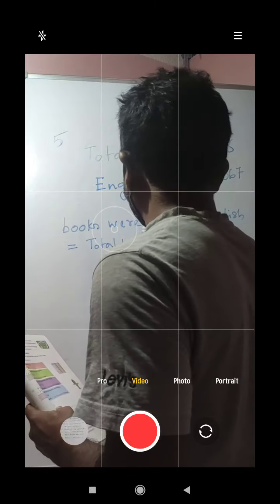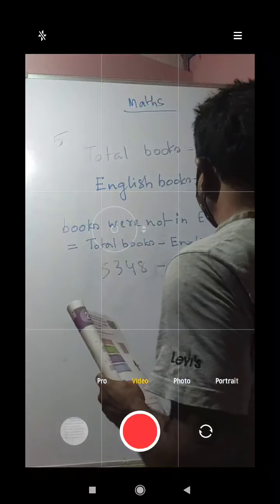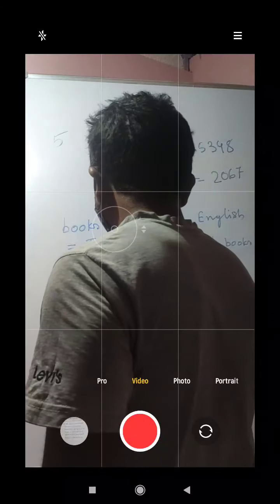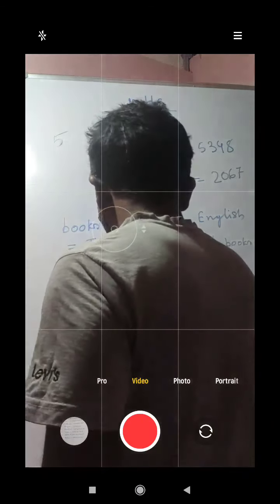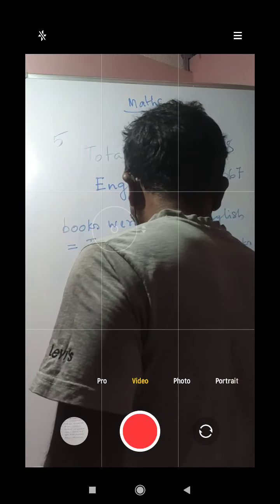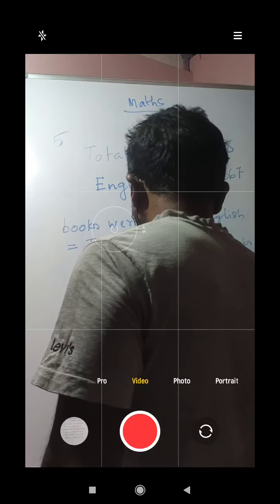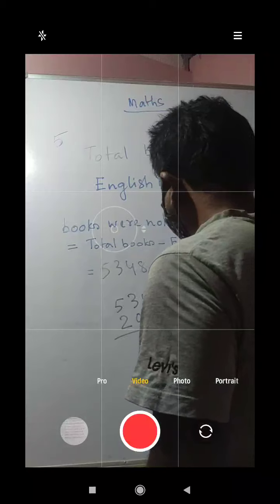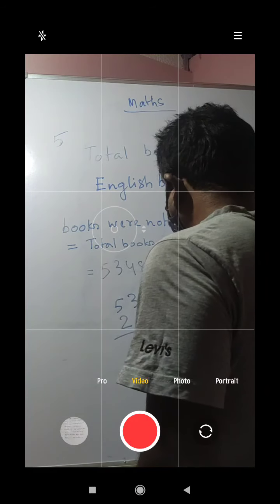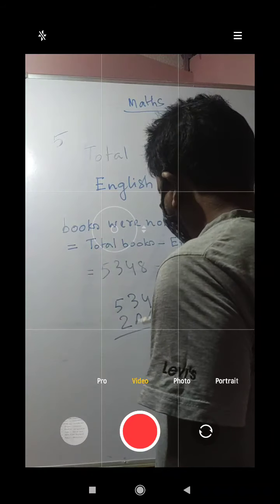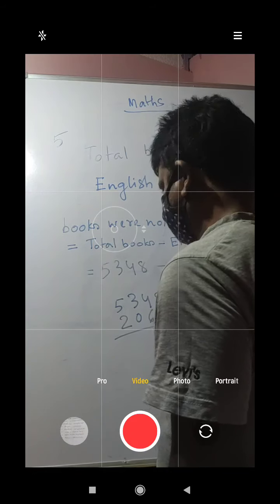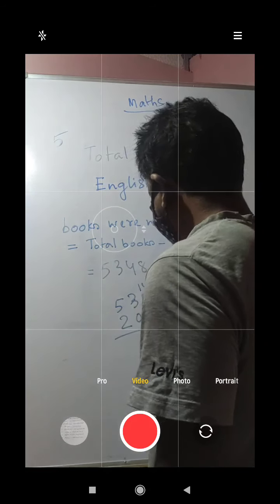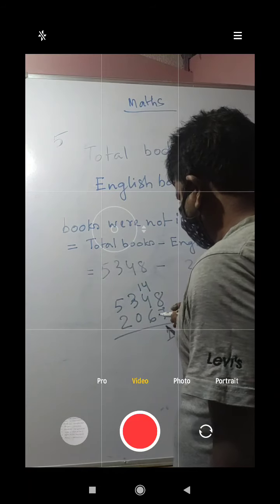Total books are 5348 minus English books 2067. Starting from ones: 8 minus 7 is 1. Next, 4 is less than 6, so we borrow 1, making it 14. 14 minus 6 is 8. After borrowing, the hundreds place has 2; we write 2 as is. Then 5 minus 2 is 3. So the answer is 3281.